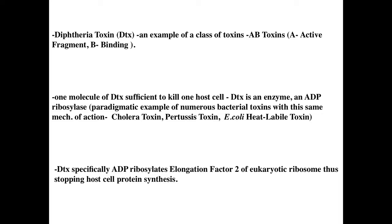Diphtheria toxin is a member of a class called AB toxins, which we touched on when we discussed cholera toxin. There are two forms: the A or active fragment, which is enzymatically active, and the B fragment, which stands for binding — it allows the toxin to bind to specific receptors on cells. Because it's an enzyme, it can perform the same process over and over again, meaning one molecule of diphtheria toxin (DTX) is sufficient to kill one cell.